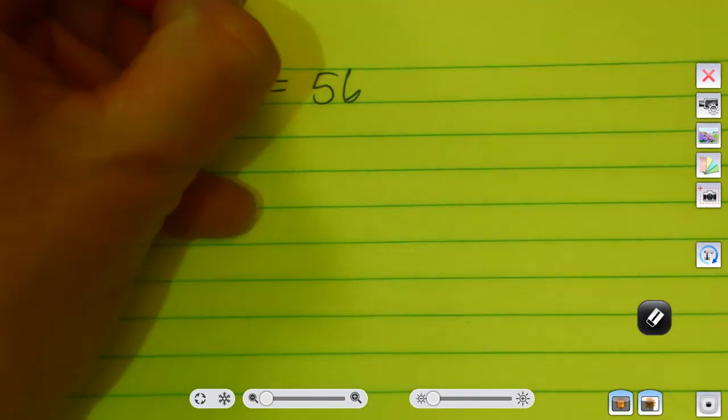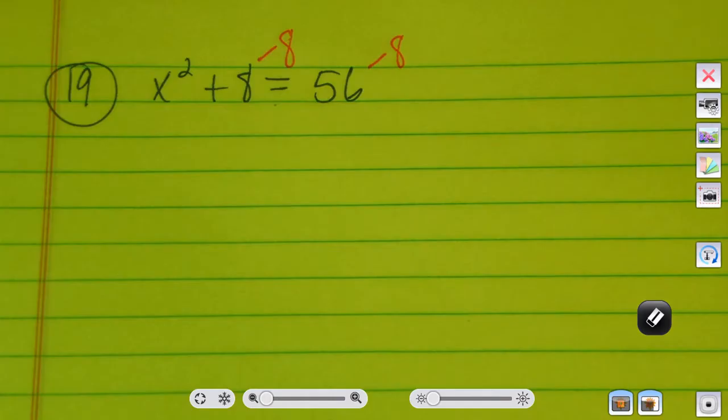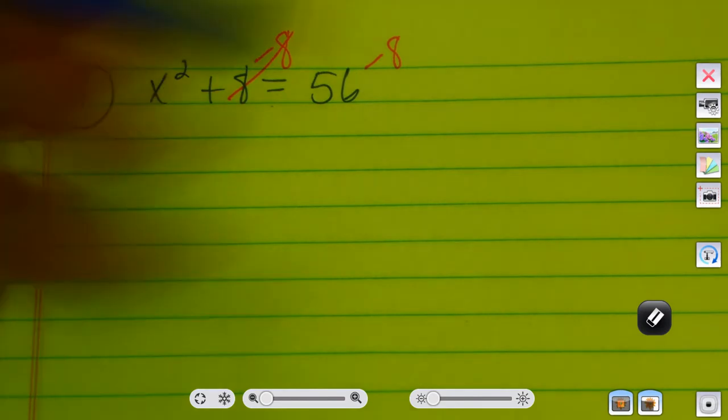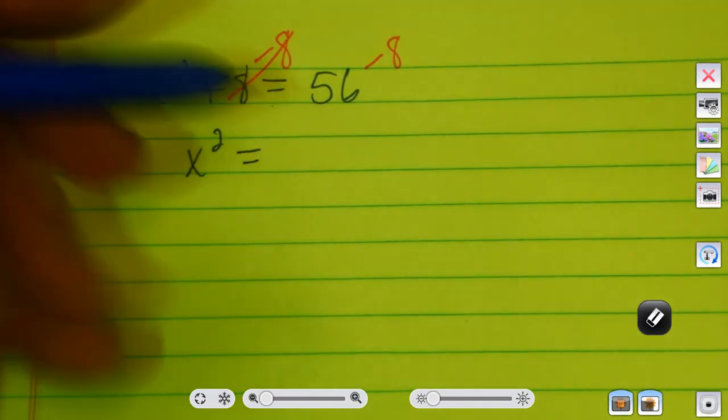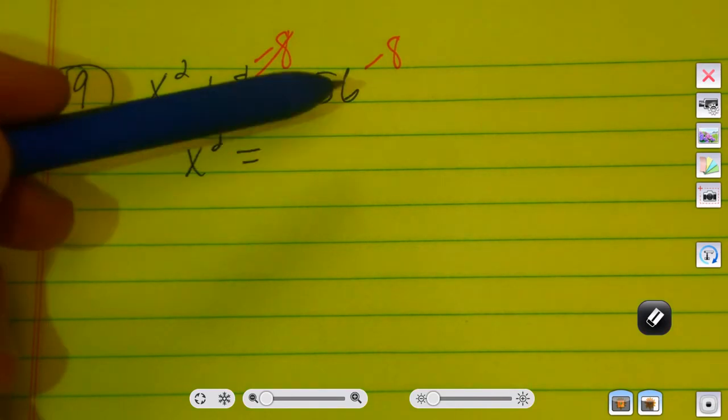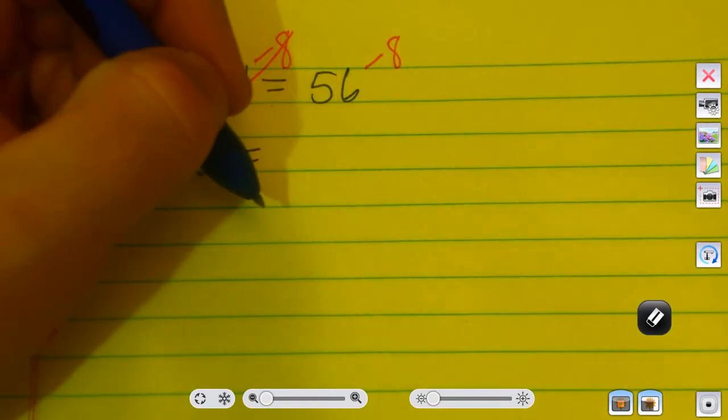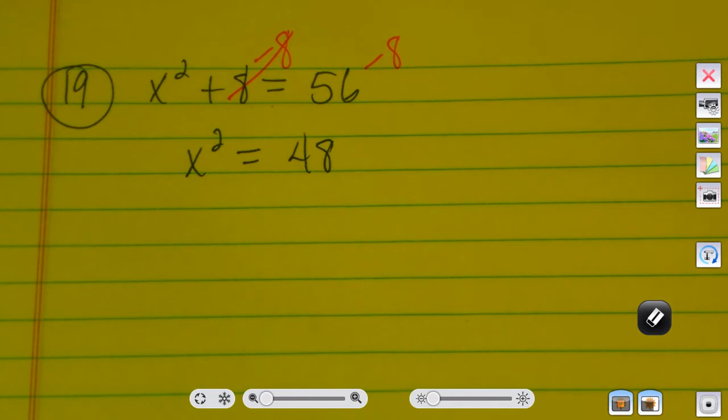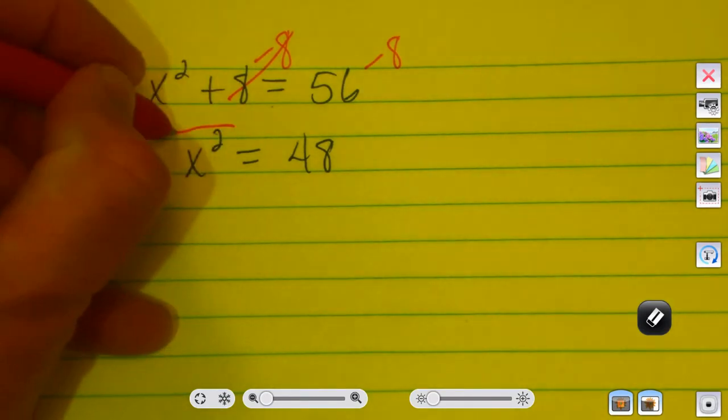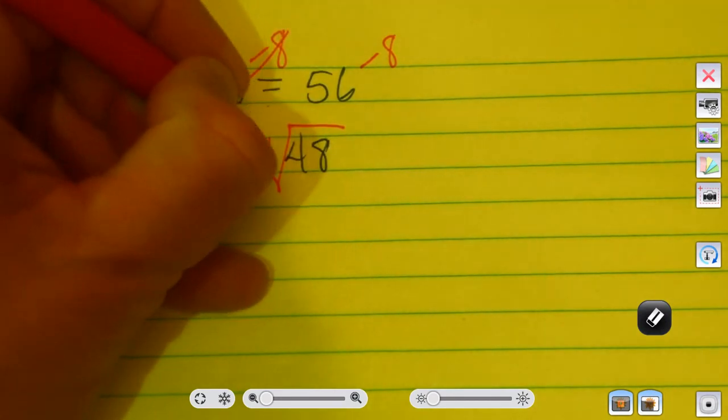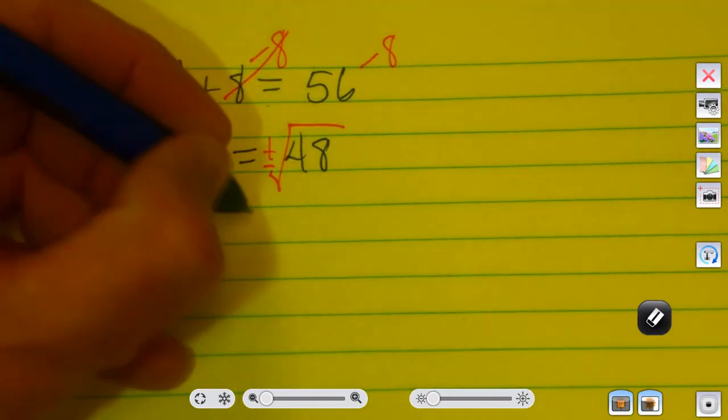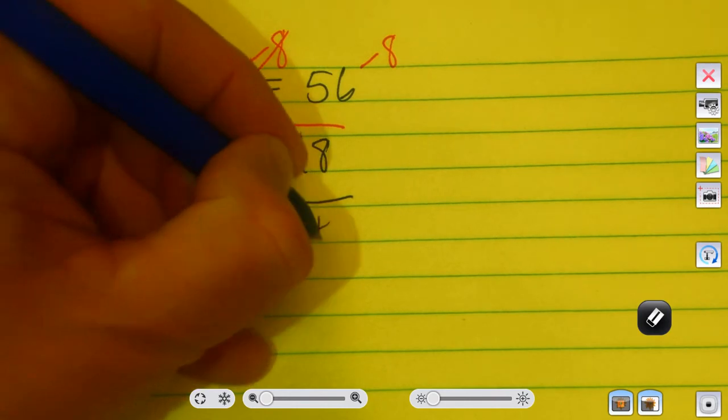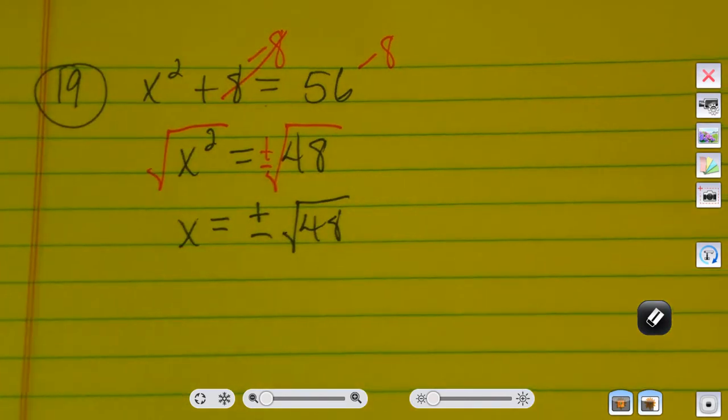Number 19 is x squared plus 8 equals 56. I'm going to subtract 8 from both sides. I'll be left with x squared equals 56 minus 8, which is 48. And I'll take the square root of both sides. So I'll get x is equal to plus or minus radical 48.